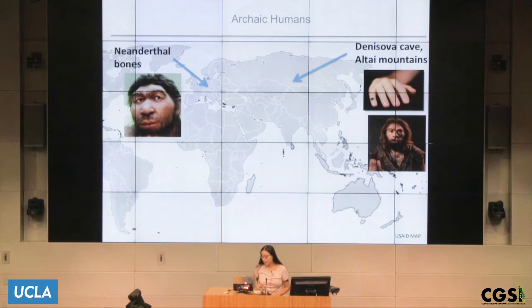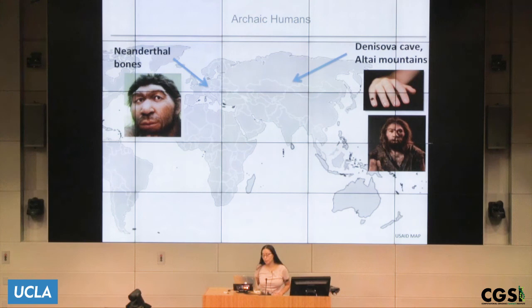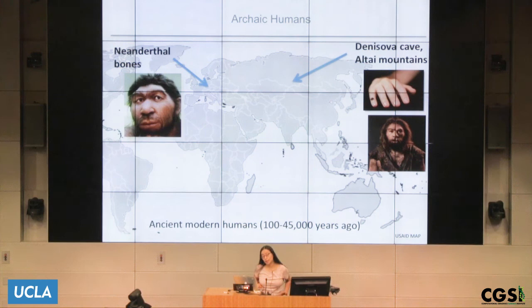In that same cave, they identified another bone that gave rise to the high-coverage Neanderthal genome, called the Altai Neanderthal because the cave is in the Altai Mountains. More recently, there's been a second high-coverage Neanderthal genome from Europe. Not only can we sequence archaic human DNA, but we can also sequence ancient DNA of modern humans that lived anywhere between 100 years ago to 45,000 years ago. This allows us to do population genetics of the past as well.